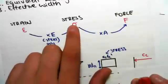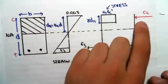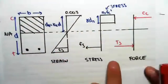And then we've got our stress in the steel down here. The last thing we want to do is we're going to go from stress to force by multiplying by the area. And we'll get the compression in the concrete and the tension in the steel.